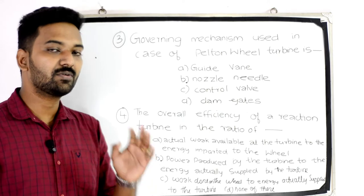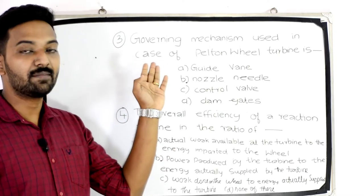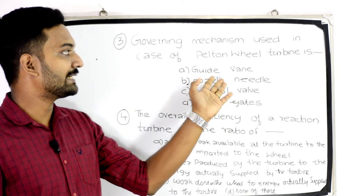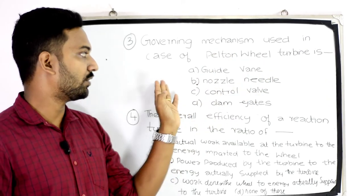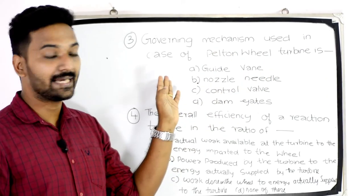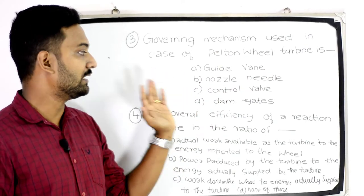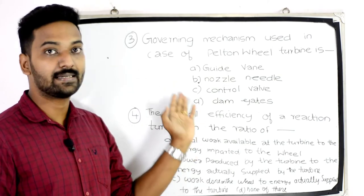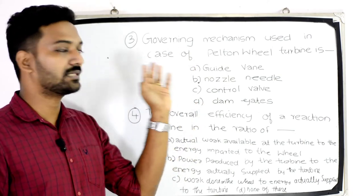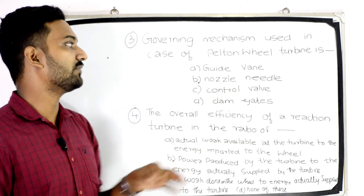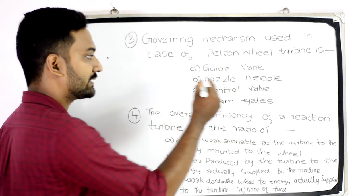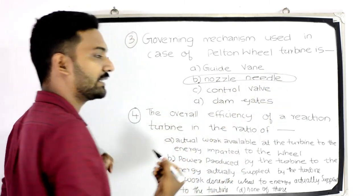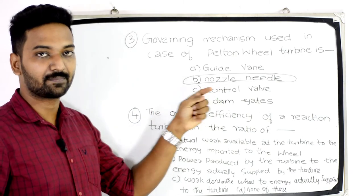The third question is: what governing mechanism is used in the case of a Pelton wheel turbine? Options: Gate Vane, Nozzle Needle, Control Valve, and Dam Gates. The answer is Nozzle Needle.